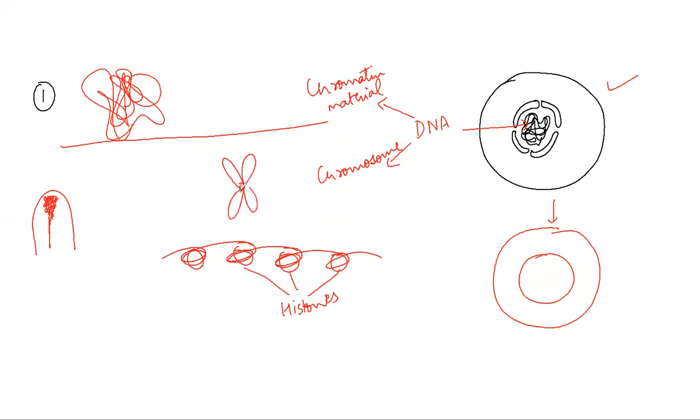So when it is packed then this form after packing, this form is basically chromosome, which is packed form of DNA with histone proteins. So chromosome is DNA plus protein.